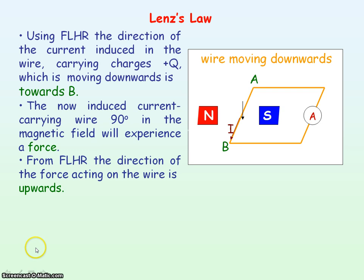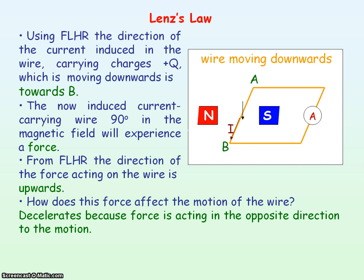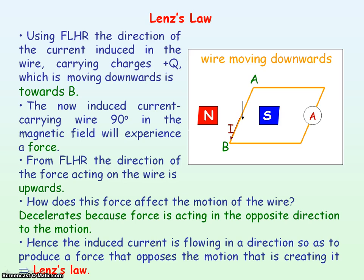So you have a wire moving downwards in a magnetic field where an induced current is flowing along the wire, but that is producing a force which is vertically upwards. This force is going to decelerate the wire because it acts in the opposite direction to the motion. Hence, we've got an induced current flowing in a direction that produces a force opposing the motion that is creating it — so we're getting Lenz's law.